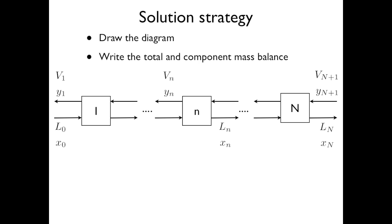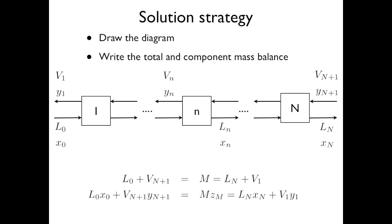The next step is to write the total and component mass balances for those systems. The total mass balance is very simple: L₀ plus V_{N+1} equals M, which is our total mixture quantity or total mixture flow, and that's equal to L_N plus V₁, the two flows out of the system. Likewise for each of those streams in terms of the component mass balance.